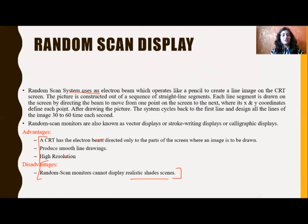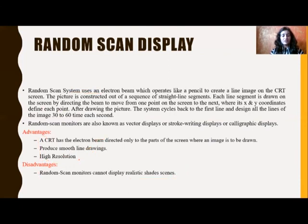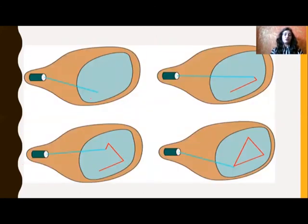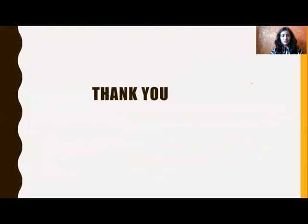Random scan is also known as vector display, stroke writing display, and calligraphic display. As you can see from this diagram, in random scan display it will produce a single line at a time. A plotter is the best example. Regarding advantages: random scan draws lines, while raster scan draws lines with the help of pixels. Both have high resolution, and both have a similar refresh rate of 30 to 60 frames per second.